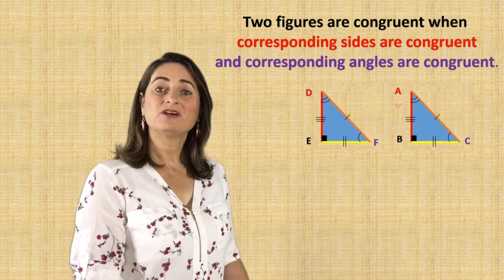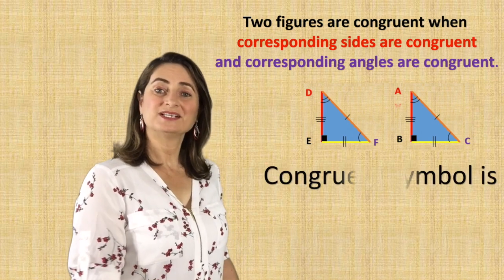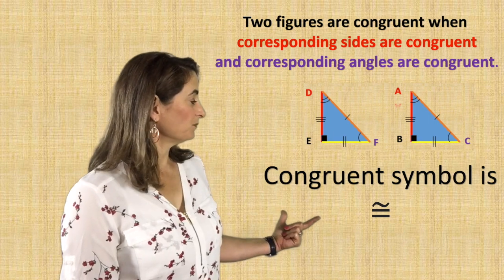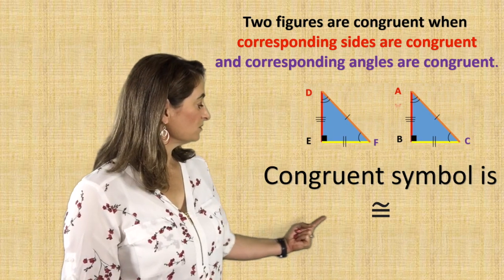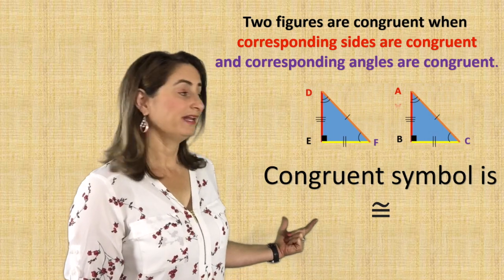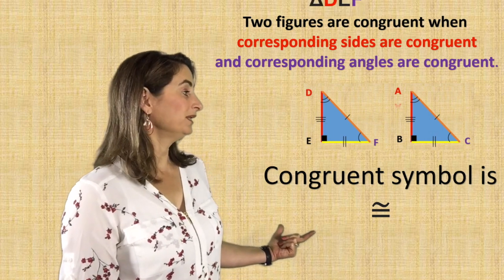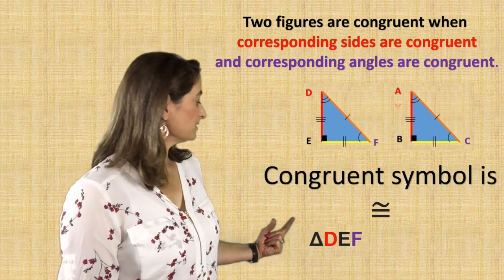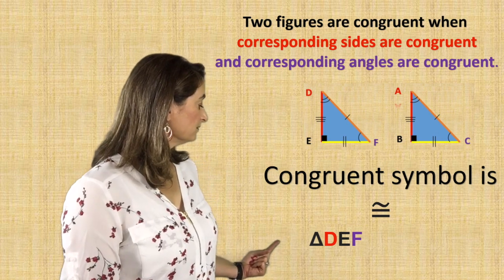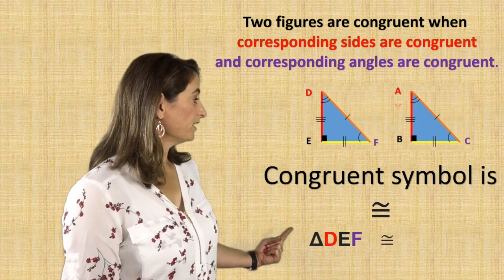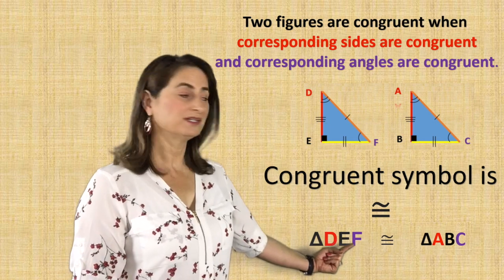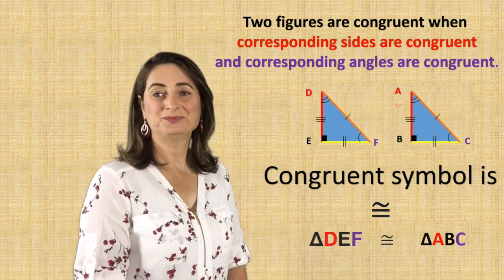Now in math, we write symbols instead of words. The congruent symbol is the equal sign with a wiggly line on top of it. And I can conclude using symbols: triangle DEF is congruent to triangle ABC.